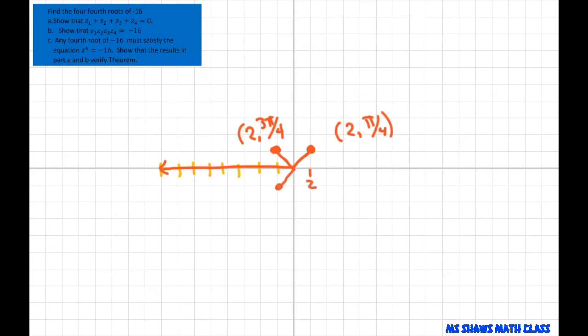This one would be 2 comma 5π divided by 4. That's in quadrant 3. And this one would be 2 comma 7π divided by 4. And then you draw your arrows here. So that's your Argand diagram.